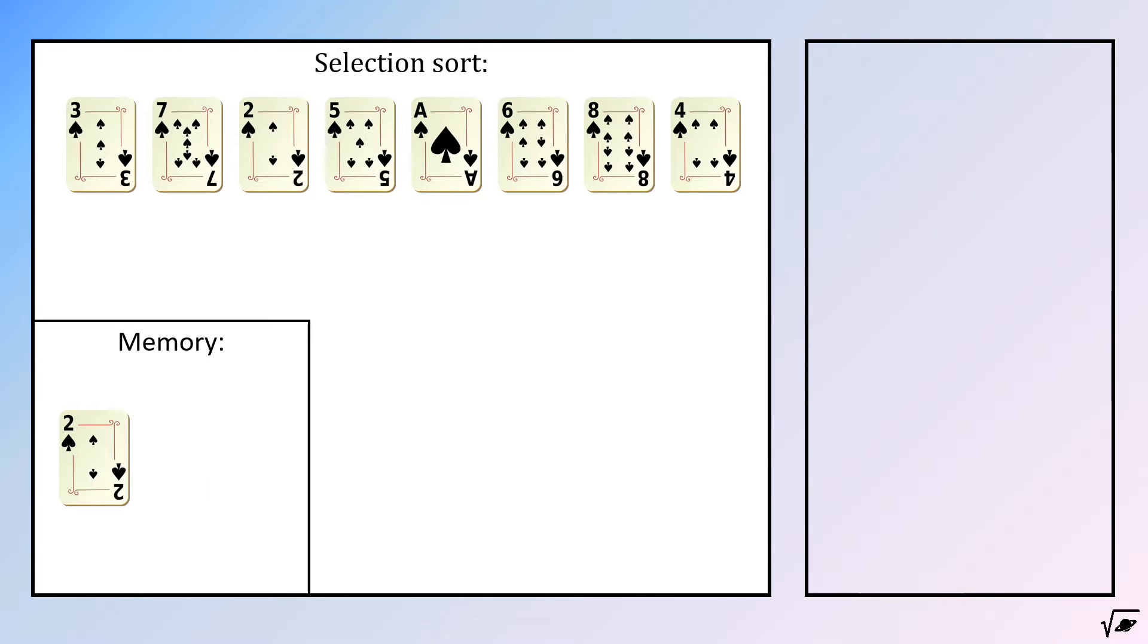So for number 5, nothing will happen. For card A, it will be placed into memory since it is smaller than card number 2. For card number 6, nothing will happen. And the same for card number 8 and card number 4. This process will result in a memory with the smallest value.